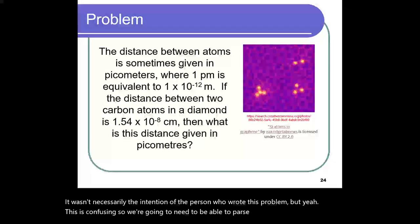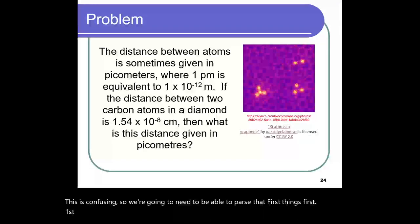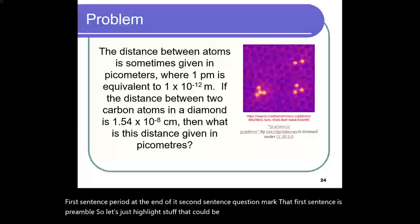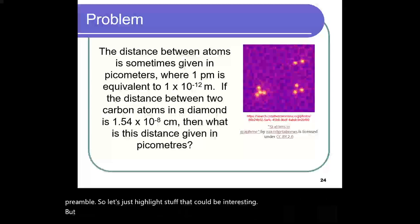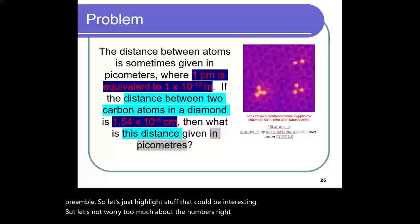First things first. First sentence, period at the end of it. Second sentence, question mark. That first sentence is preamble. So, let's just highlight stuff that could be interesting, but let's not worry too much about the numbers right now. And what we find out is this.